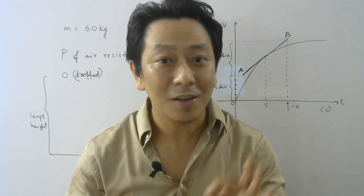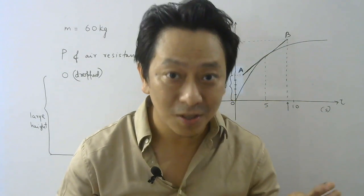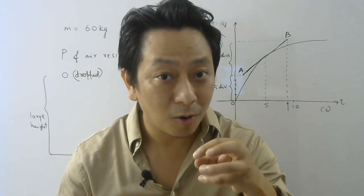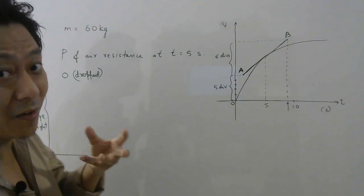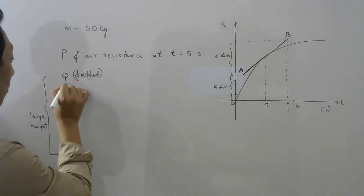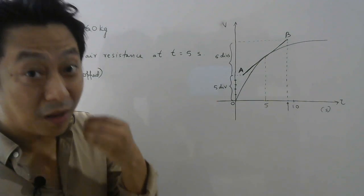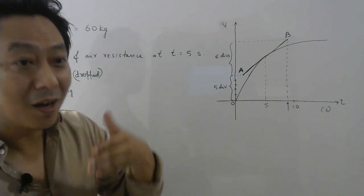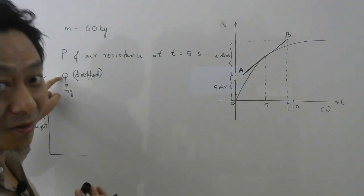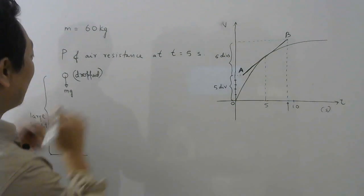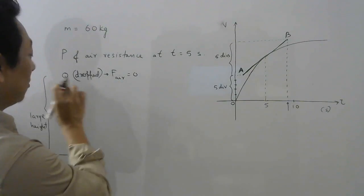Here they are asking for the power of air resistance, so the force we need is the force on the body by air. Now initially the body was dropped with velocity 0, so the only force acting is the gravitational force mg — there will be no air resistance. Why? Because unless we move, we do not feel air resistance. So since the body right now has 0 velocity, the air resistance is 0 and the force of air is 0.